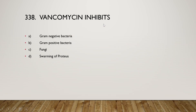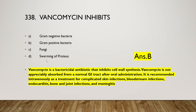Vancomycin inhibits gram-negative bacteria, gram-positive bacteria, fungi, or swarming of Proteus? The right answer is option B — gram-positive bacteria. Vancomycin is a bactericidal antibiotic that inhibits cell wall synthesis. It is not appreciably absorbed from the GI tract after oral administration and is recommended intravenously for complicated skin infections, bloodstream infections, endocarditis, bone and joint infections, and meningitis.